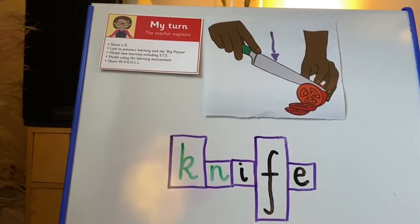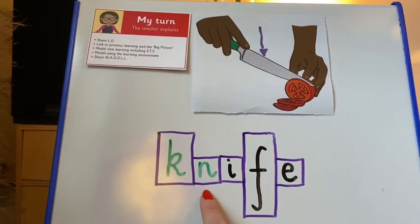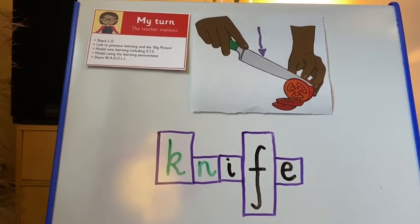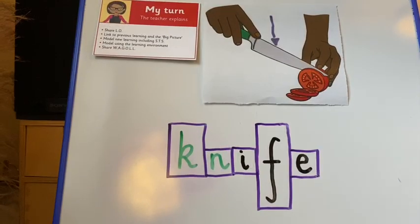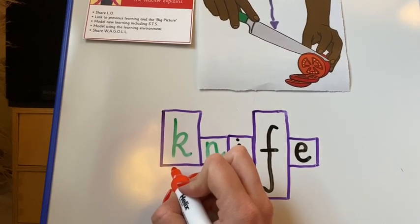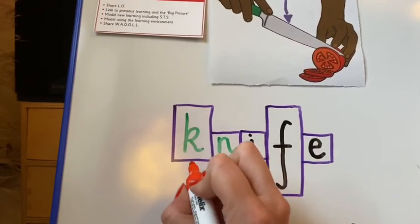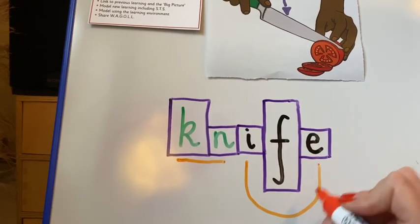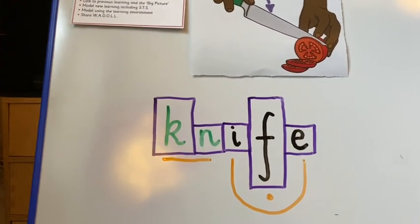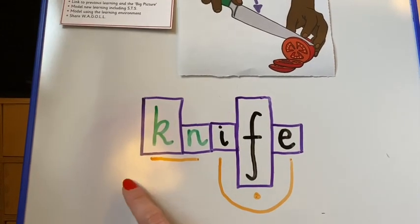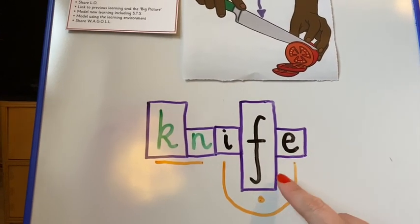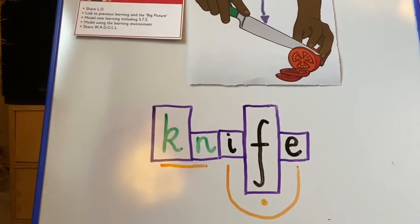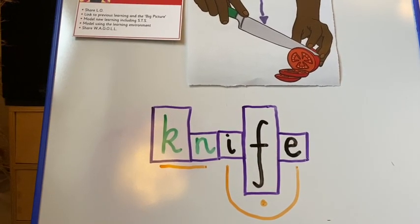Along with the rainbow writing, I also find drawing boxes around my letters helps me to remember. And along with that, I still like to put my sound buttons to identify. So — N, I, F. Knife. Again, look, we've got another split vowel digraph.